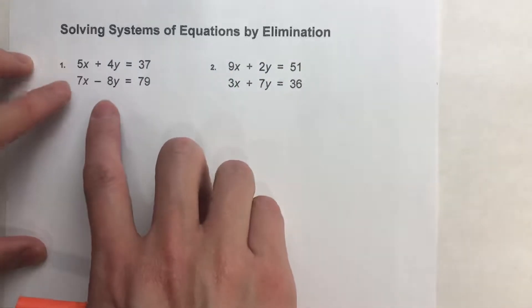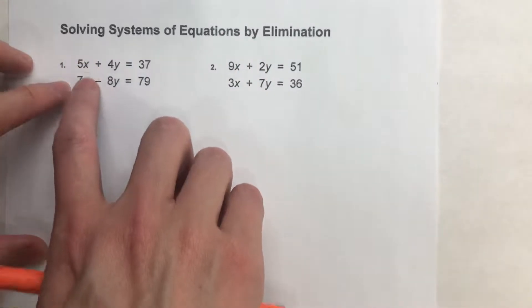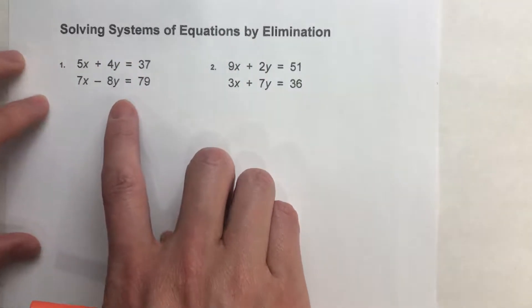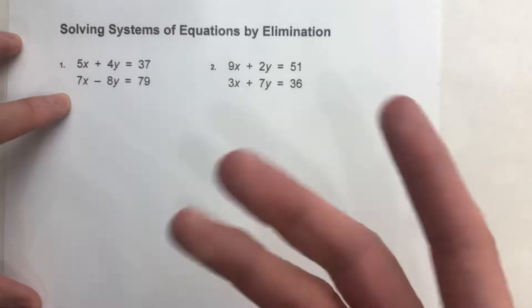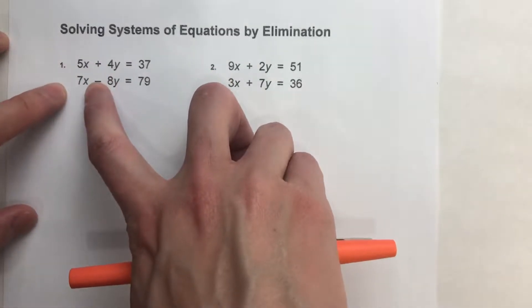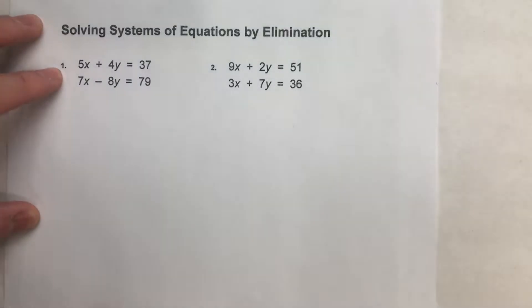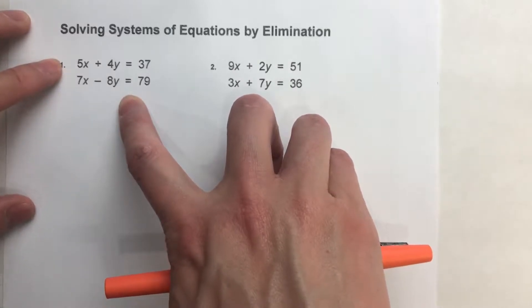Now, ideally, when you have a system of equations and you want to solve it by elimination, either the x's or the y's match up, meaning they have the exact same amount but are opposites of each other. For example, if this was 5x and this was negative 5x underneath, it'd be perfect, because when we add them together, it would eliminate all the x's. However, if you look at this situation, neither of those are happening, right?